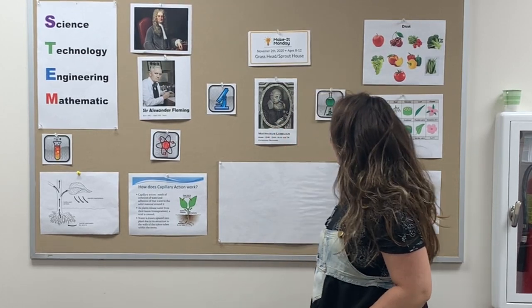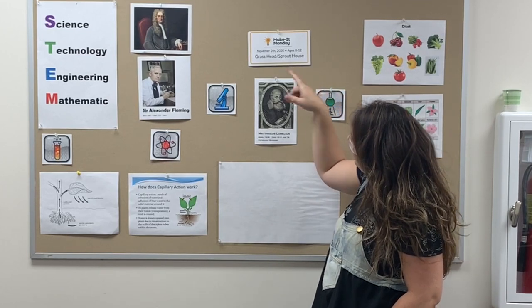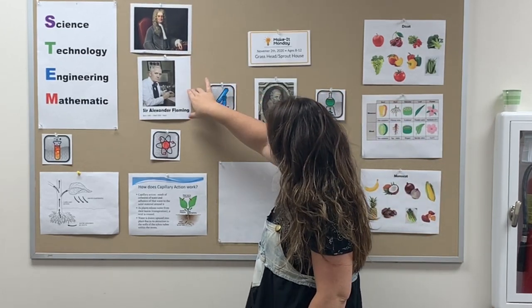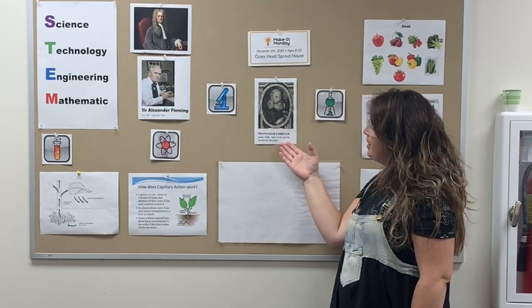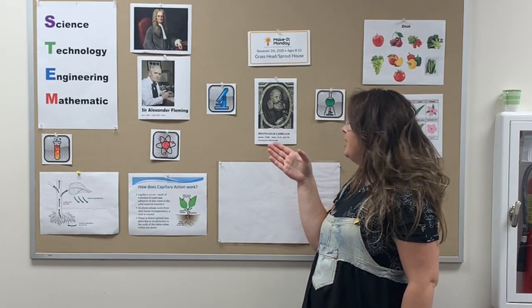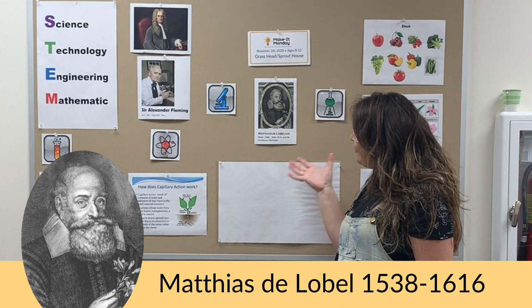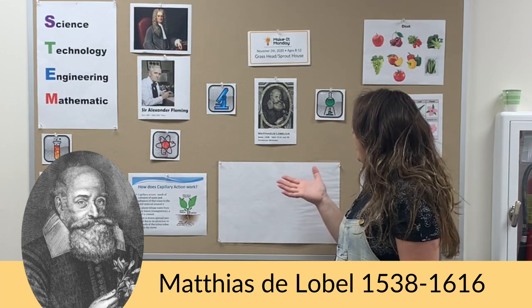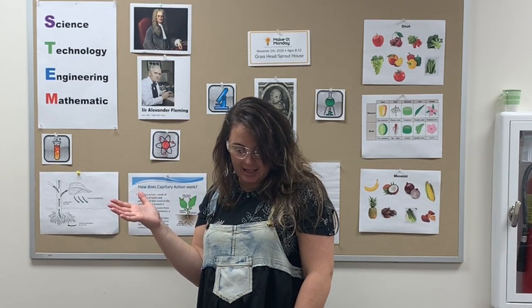Hi friends, it's Miss Nicole for Make It Monday at the Tremont District Library and this month, November, we are doing Grasshead and Sprout House. We've done Newton and Fleming as our scientists showcased for September and October. We're still working with STEM and this is the scientist — really he's a physician and botanist — so botanist means he does more with plants. His name is Matthias Lobel and he was born in 1538 and died 1616, so he lived 404 years ago.